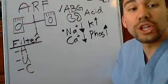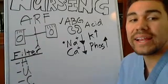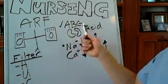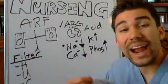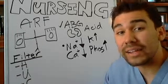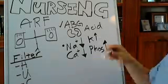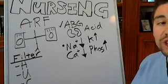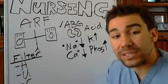How are your labs going to look? If your hydrogen ions are not getting out of the body through the urine, you're going to have your ABGs show metabolic acidosis, possibly.